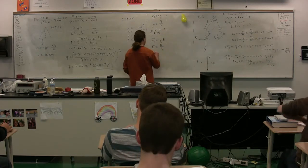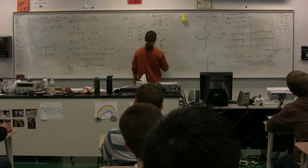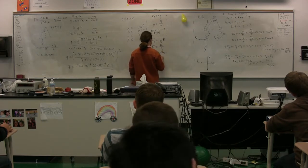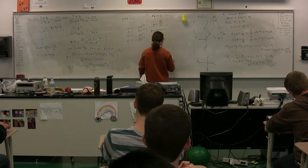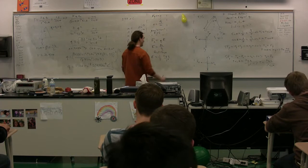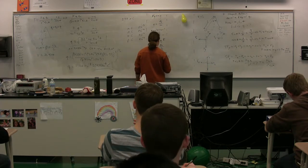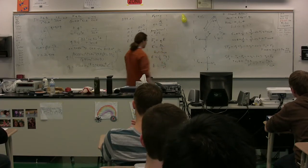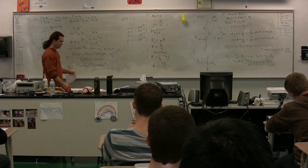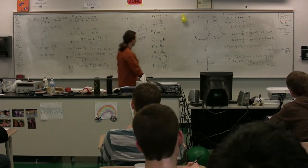If we're dealing with a point charge, then the electric field is going to be equal to 1 over Q times K times Q1 times Q2 over R squared. That Q is going to cancel out.